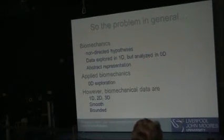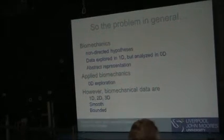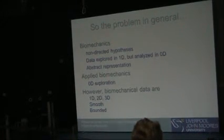So that's where we basically have identified the problem. The problem is that in biomechanics we tend to have non-directed hypotheses. Remember, we start typically from looking at all the data before we might formulate a directed hypothesis. This is a very bad way to deal with data. We have data that we tend to explore in 1D, and let's just focus on this one-dimensional curved data, but actually we analyze it in 0D. That's a problem that we have, and we end up representing our data in a very abstract form.